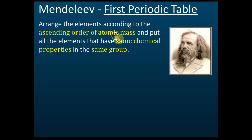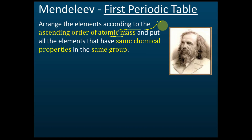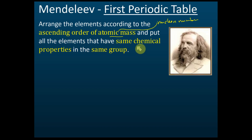Atomic mass is the nuclear number. He arranged the elements in ascending orders of atomic mass — or nuclear number — and placed all elements that have the same chemical properties into the same group.